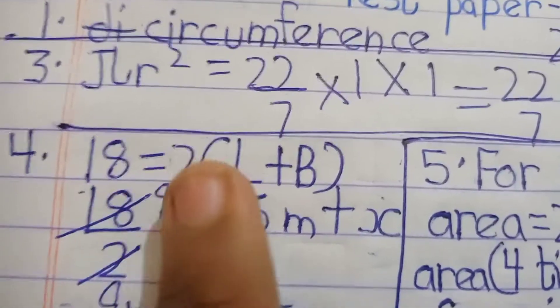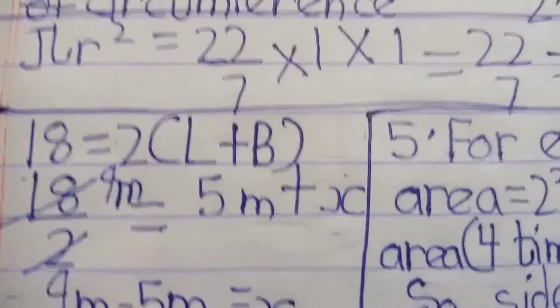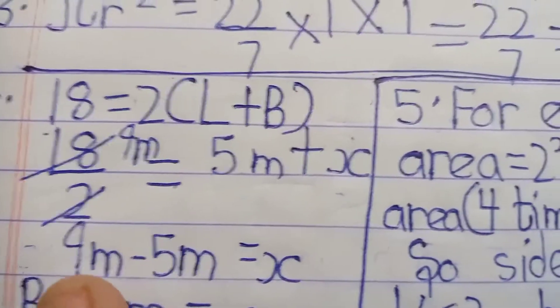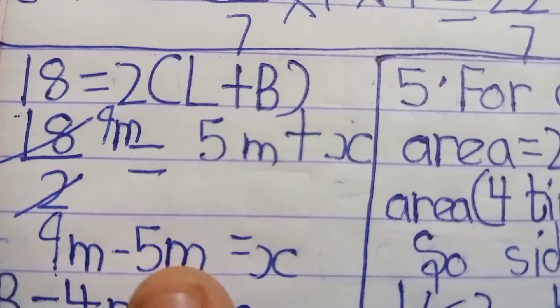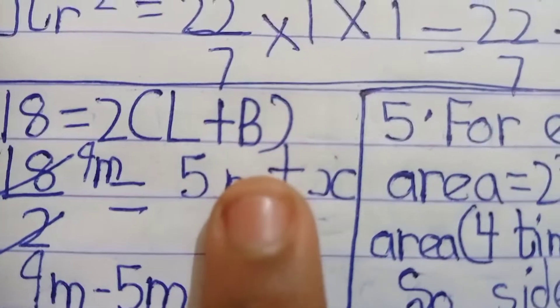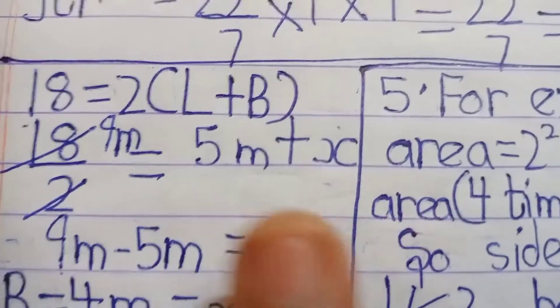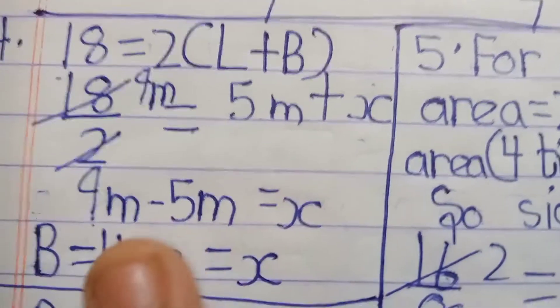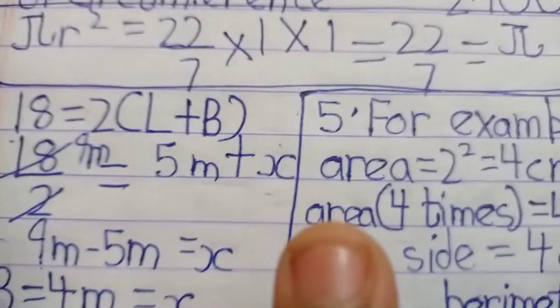So 18 equals 2 multiplied by (5 plus x), which gives 9 equals 5 plus x, then 9 minus 5 equals x, so x equals 4 meters. The breadth is 4 meters. Now question five: if the area of a square is increased four times, how much does the perimeter increase?